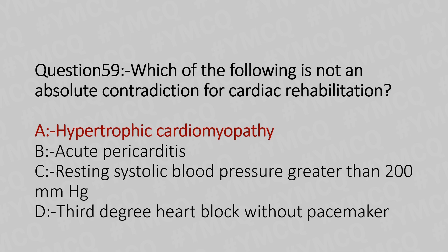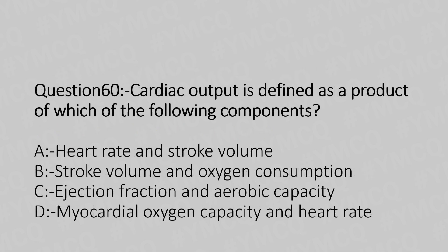Now let's move to question number 60. Cardiac output is defined as a product of which of the following components? Option A, heart rate and stroke volume. Option B, stroke volume and oxygen consumption. Option C, ejection fraction and aerobic capacity. Option D, myocardial oxygen capacity and heart rate. And the answer is Option A, heart rate and stroke volume.